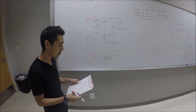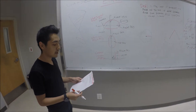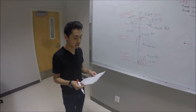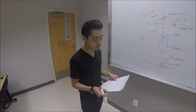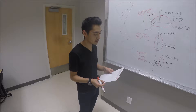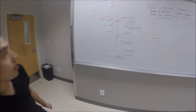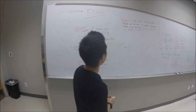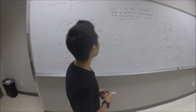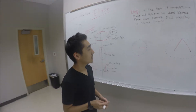It was not until Apollonius, between 262 BC and 190 BC, that he gave the conics their modern names: circle, ellipse, parabola, and hyperbola. There are three types of conic sections: the hyperbola, the parabola, and the ellipse. The circle is actually a special case of the ellipse and is sometimes called a fourth type of conic section.